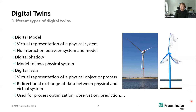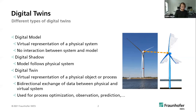Once we have a more sophisticated process where we have a following of the model with a real system, we can name this a digital shadow. When we want a digital twin, the main aspect is that we need a bi-directional communication between the physical system and the virtual system. At the heart of all of this, we still have a model of the system.